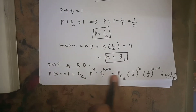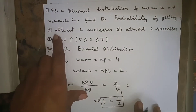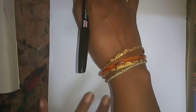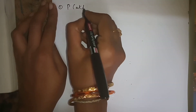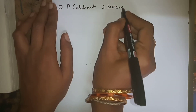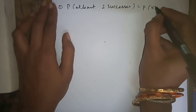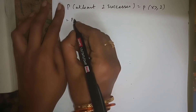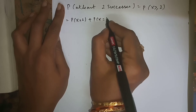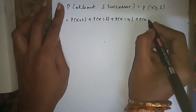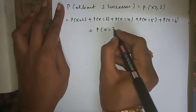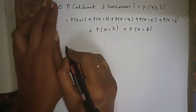The first bit asks for P(at least 2 successes), which means P(X ≥ 2) = P(X=2) + P(X=3) + P(X=4) + P(X=5) + P(X=6) + P(X=7) + P(X=8). In each term, we substitute x = 2, 3, 4, 5, 6, 7, 8 into the formula.